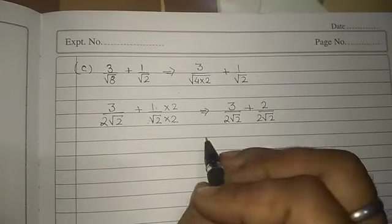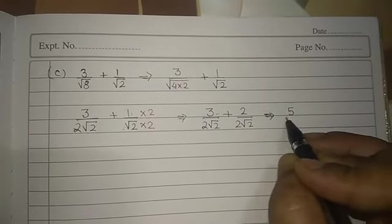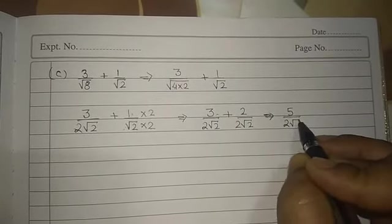Now what will happen here? It will go and form 3 plus 2 become 5 upon 2 root 2.